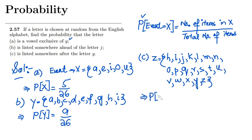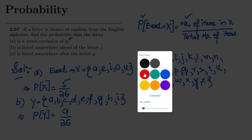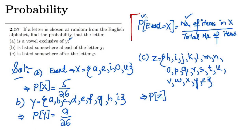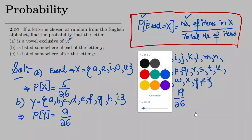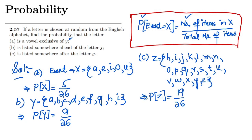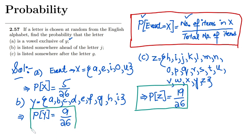Now in order to find the probability of Z, using the same formula, the probability of Z would be the number of items here, which are 19, divided by 26. So that is the solution of part C. This is the solution of part C, this is of part B, and this is of part A.